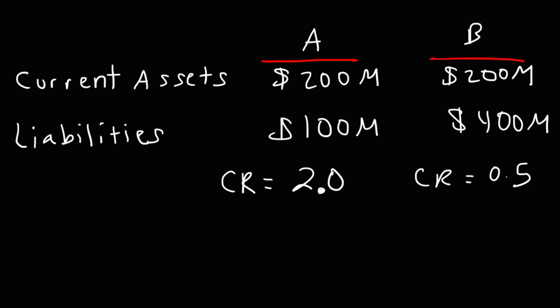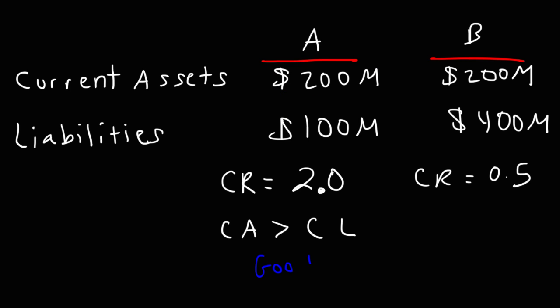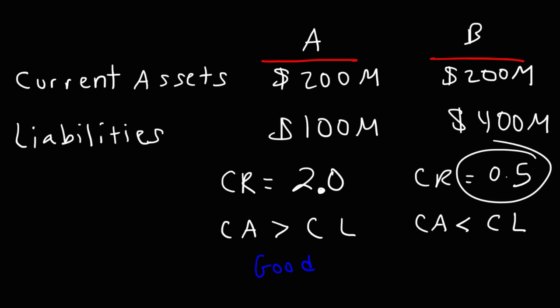For company A, the current assets exceed the current liabilities — $200 million is greater than $100 million — so that's a good thing, and we can see the current ratio is above 1. For company B, the liabilities exceed the assets. It's not a good thing to owe more than what you have. The current assets are less than the current liabilities, the current ratio is less than 1, and so that's a bad thing.